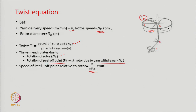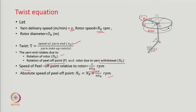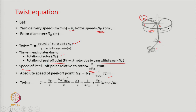That additional speed is V divided by π·D_R — that is the yarn delivery speed or yarn take-up speed. Different books write different things: sometimes delivery speed, sometimes take-up speed, meaning the same. So the peel-off point speed is V/π·D_R. The absolute speed of the peel-off point is therefore N_R plus V/π·D_R. From there, twist equals N_R/V plus 1/(π·D_R). N_R/V is the major component of twist generation; 1/(π·D_R) is very very negligible.